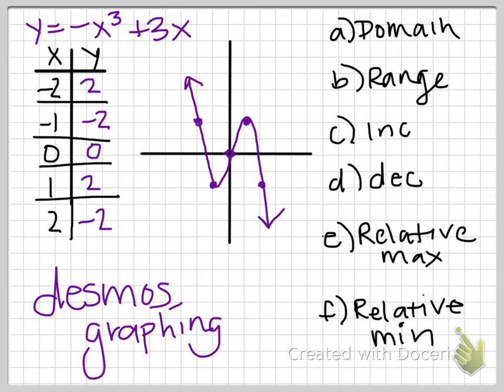So going over some terminology, our domain for this problem will be negative infinity to infinity. The range will be the same. Again, we read our graphs left to right. So if I start on the left-hand side, traveling to the right, my graph has a negative slope. This is where it has a negative slope. And then it changes directions. And from here to here, I have a positive slope. And then again, I change directions. And I have a negative slope over here.